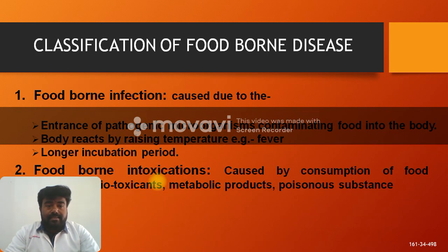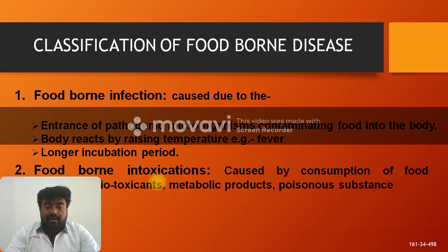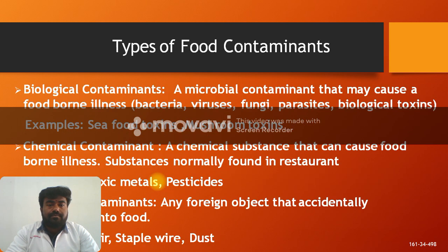The main classification of foodborne diseases includes foodborne infection and foodborne intoxication. Foodborne infection occurs due to the entrance of pathogenic microorganisms from contaminated food into the body. The body reacts by raising temperature, causing fever, and sometimes a longer incubation period. Foodborne intoxication is caused by consumption of food containing metabolic products — toxic or poisonous substances present in the food material.